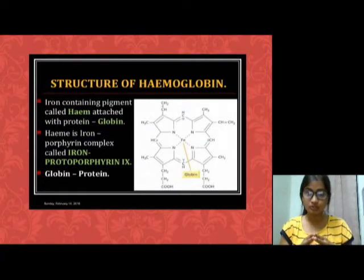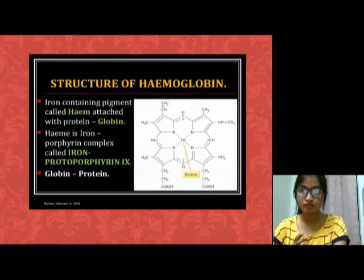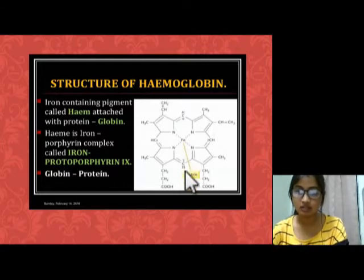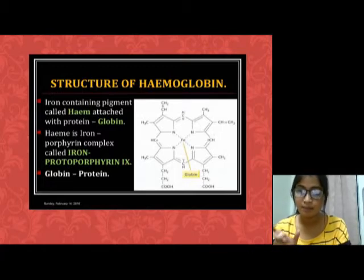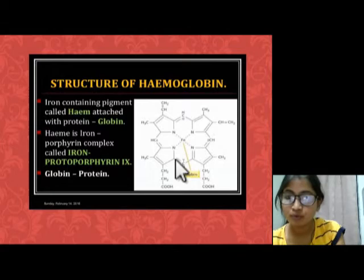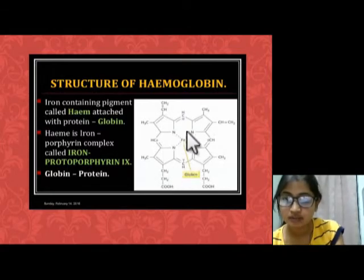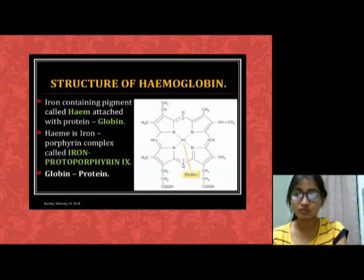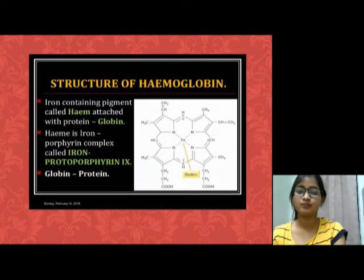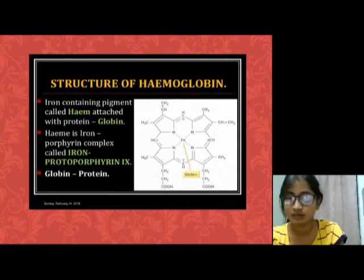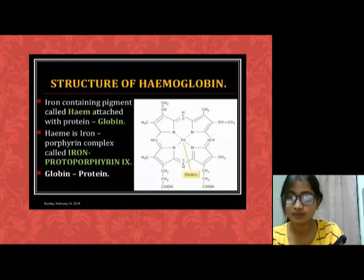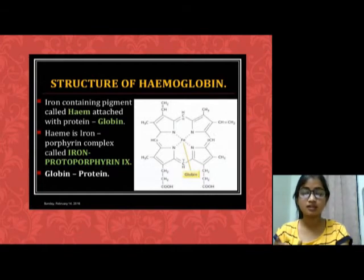The very important thing in this video is the structure of Hemoglobin. In the structure of Hemoglobin, the iron atom is present in the center and there are 4 porphyrin rings. These 4 porphyrin rings are 4 pyrrole rings connected with CH bonds. The nitrogen atoms of the pyrrole rings are coordinated with the iron atom. There are various types of substituents attached at the end of the pyrrole rings: methyl groups, vinyl groups, and propionic acid groups.